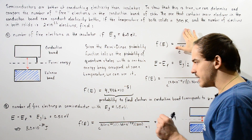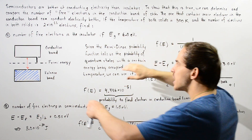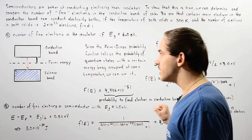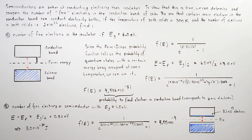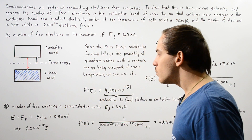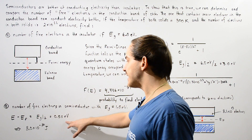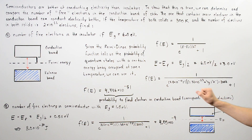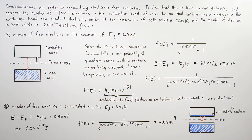In part B, we repeat this process for the semiconductor, which has a gap energy of not 6 eV but only 1 eV. If we find electrons in the conduction band of the semiconductor, that confirms it is better at conducting electricity. Following the same procedure, we divide 1 eV by 2 to get E minus E_f, convert to joules, then plug into the Fermi-Dirac probability function. This gives us approximately 4.05×10⁻⁹.